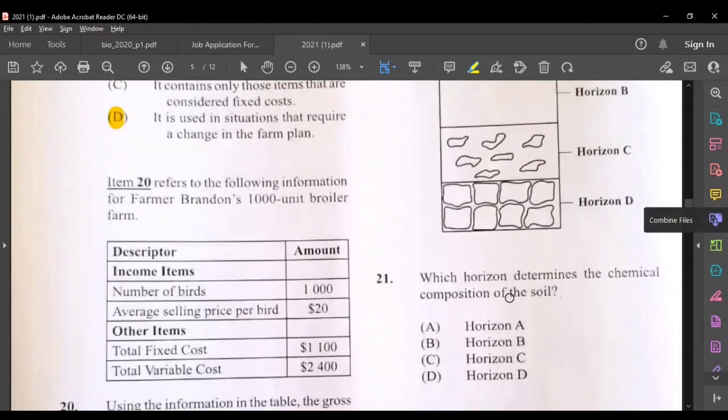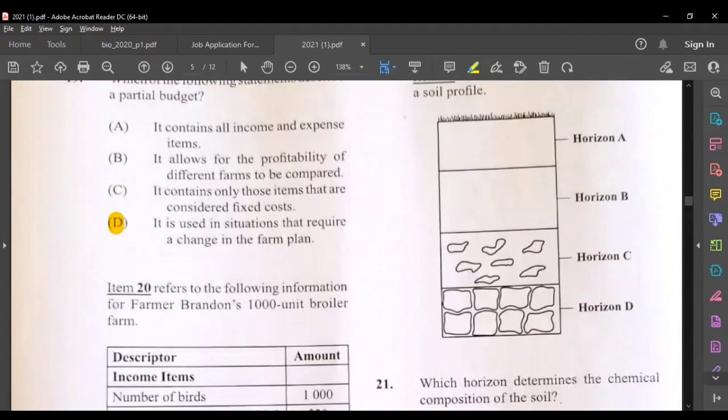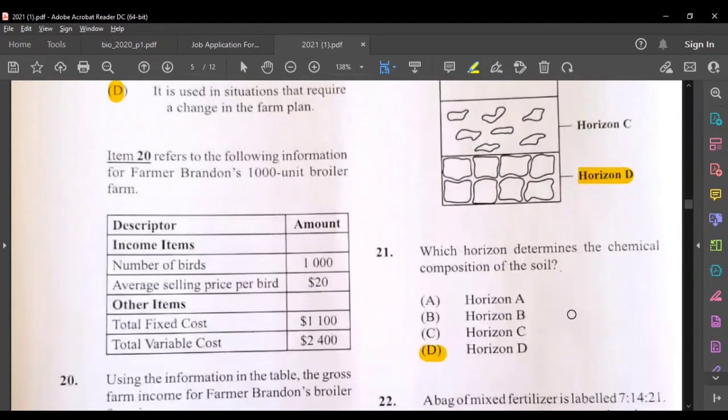Question twenty-one refers to this diagram which horizon determines the chemical composition of the soil. The parent material normally determine the chemical composition. That would be horizon D here. That's the parent content, the parent material, and that would be D.